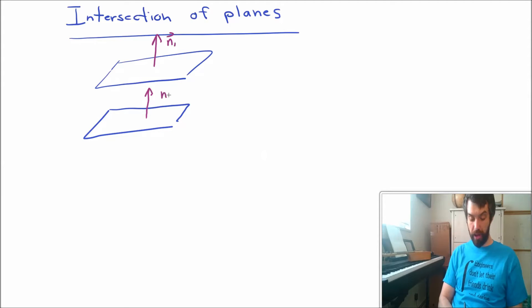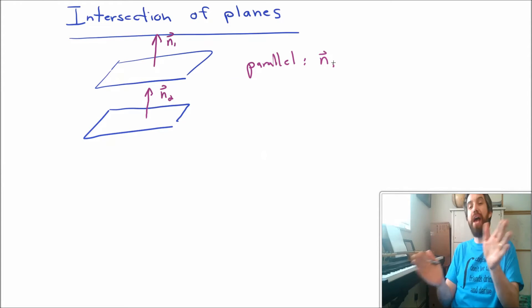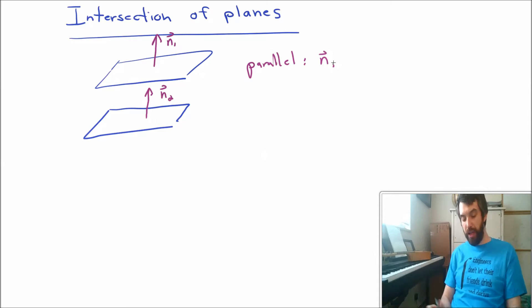So maybe I'll call it n1 and n2. And in this case where I've got the parallel, what I'm going to say is that my normal vectors, they have to have the same direction. They might not have the same length. I might put a scalar k here. You might have the one normal being, say, the negative of the other or twice as long or negative twice as long. But we do know that they have the same direction and so they're just going to be a scalar multiple of each other. So that's one possibility.